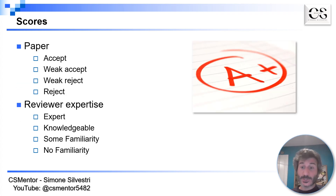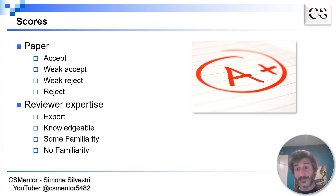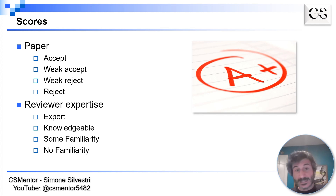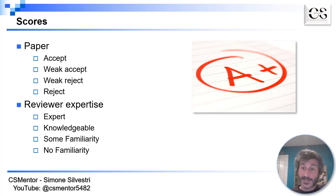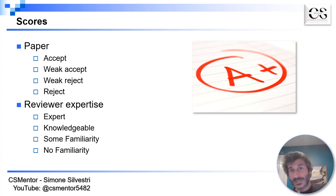There are generally two scores that you need to provide as part of your review. The first one is about the paper — you need to say if you want the paper to be accepted, rejected, or maybe something in between. The second one is about your familiarity, so how confident you are about the specific subject topic addressed in the paper. This usually goes from expert to no familiarity.